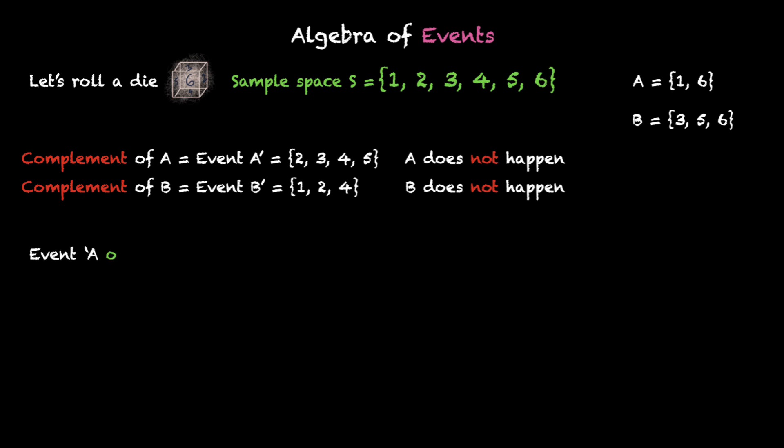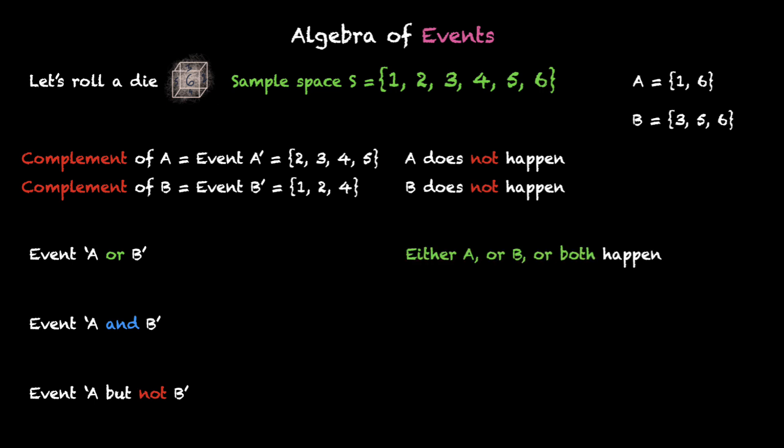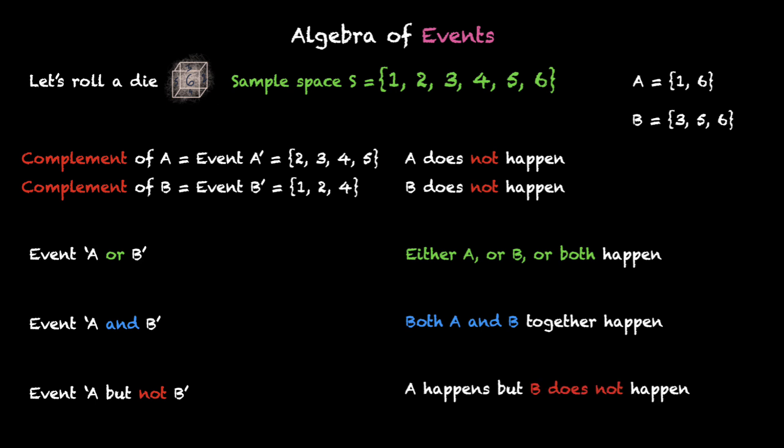Let's look at a few other cases. What about event A or B? What about event A and B? And what about event A but not B? Now 'or,' 'and,' and 'but not' are English words — pause the video and think about these events. A or B means either A or B or both have happened. A and B means both A and B have to happen together. A but not B means event A has happened but B does not happen. For A or B, we get {1, 3, 5 and 6} — we've picked elements from A and B both and put them together.